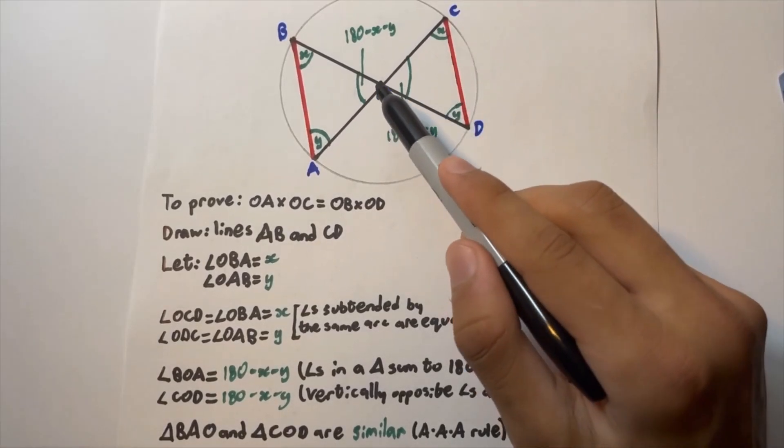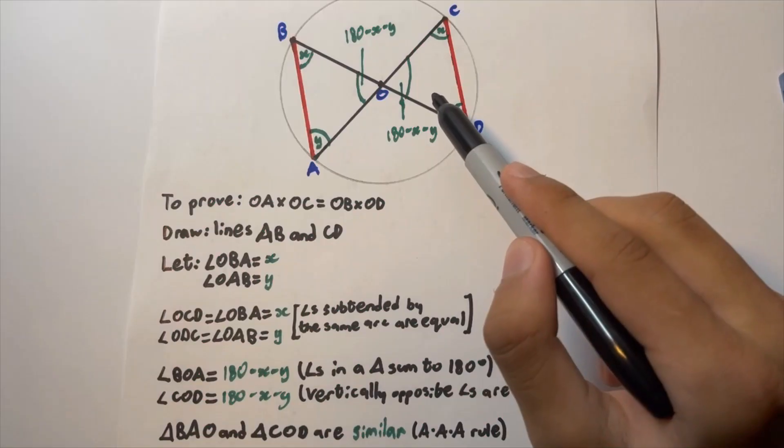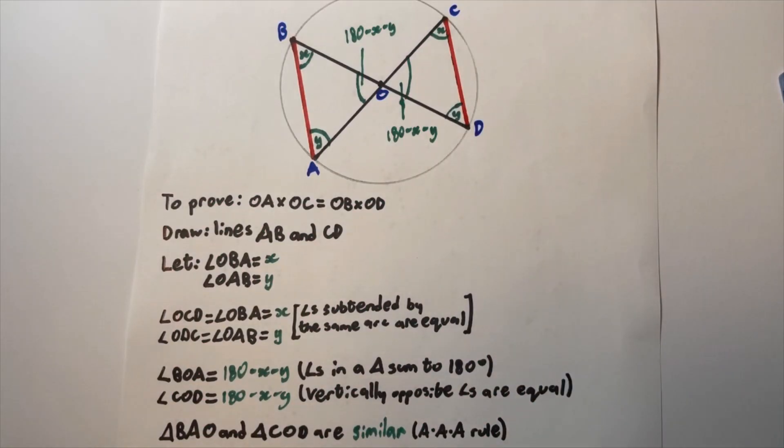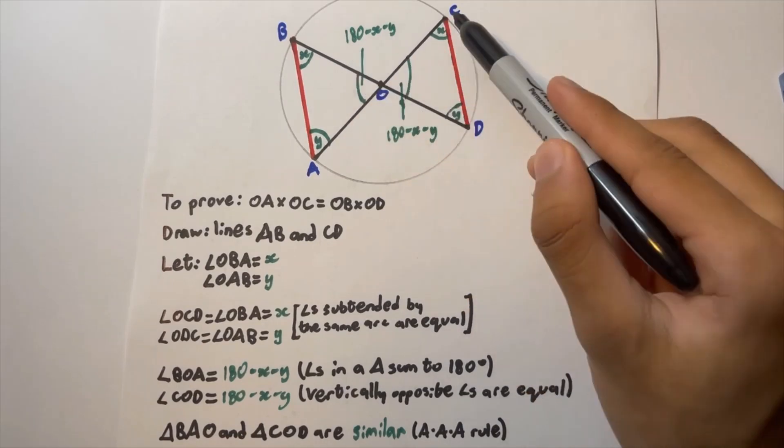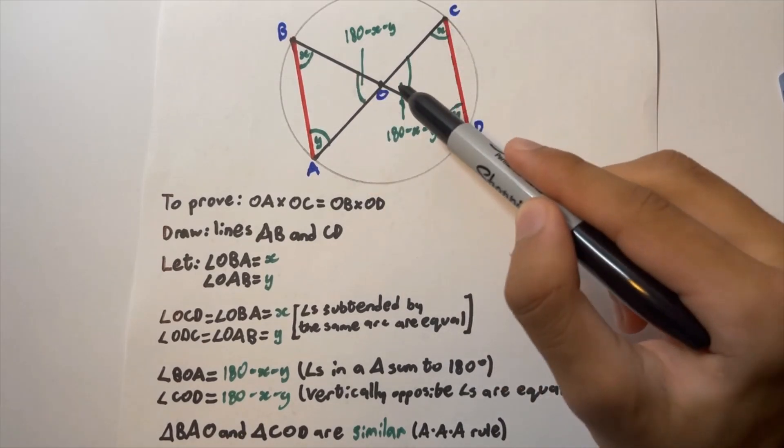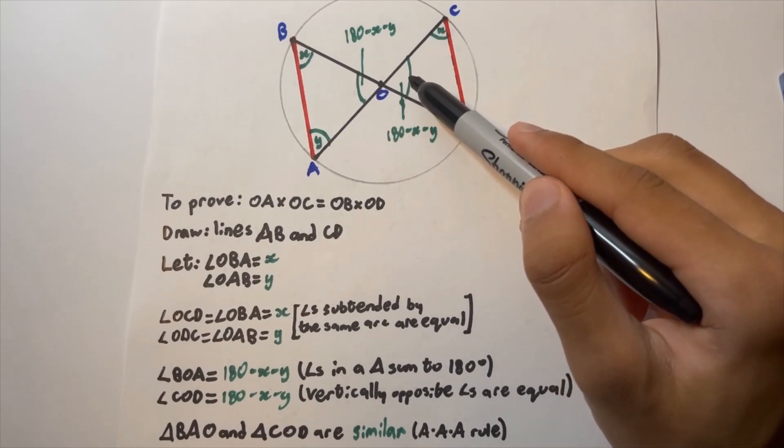Now that we've worked out all three angles of triangles BAO and COD, we can say that they're both similar using the AAA rule. This means that all three angles of each triangle are equal: an x, an x, y, y, and 180 minus x minus y along with 180 minus x minus y.